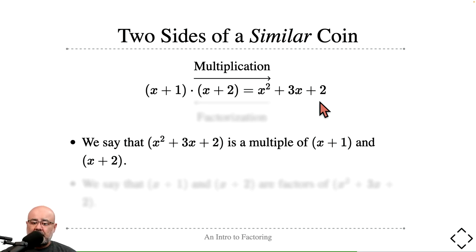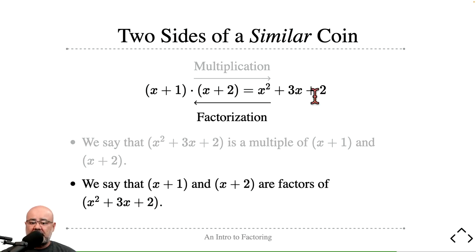Now, if I wanted to reverse the direction and start with this side and say, what would I have multiplied to give me x²+3x+2? Well, the answer would be (x+1) times (x+2). I would have multiplied these two things to create this thing on the right-hand side. So we say that x+1 and x+2 are factors of this expression, x²+3x+2.